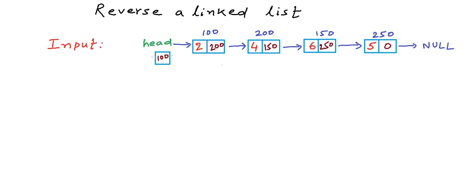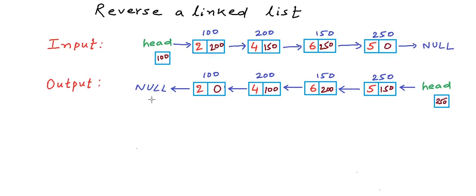Given a linked list like this, if we have to reverse it — by reversing we do not mean moving around data, like we cannot move 5 at address 100 or 2 at address 250 — we actually have to adjust the links. So our output should be something like this: the head pointer should now point to the node at address 250, and we traverse 250 to 150 to 200 to 100, where the node at address 100 should have address 0 or null. In each node, the first field in red is the data part and the second field is the address part.